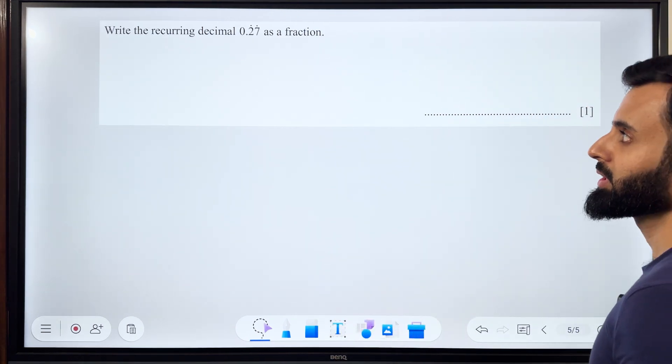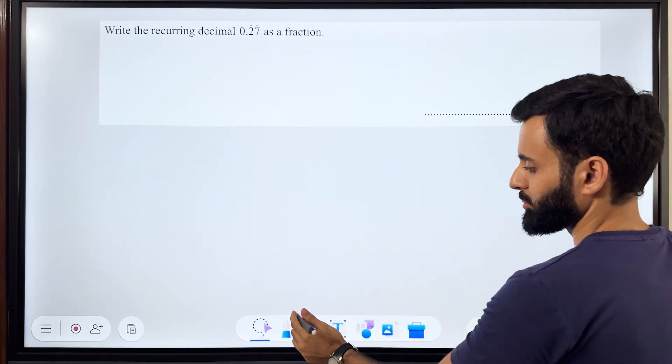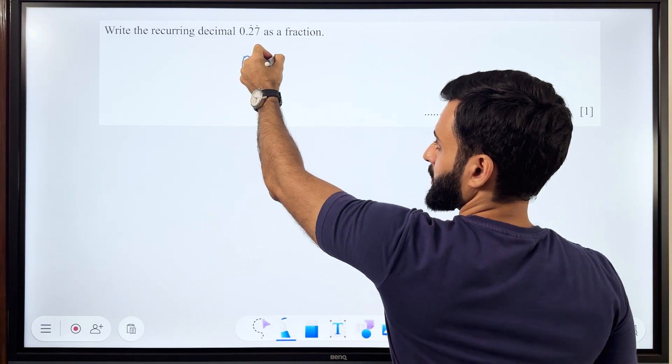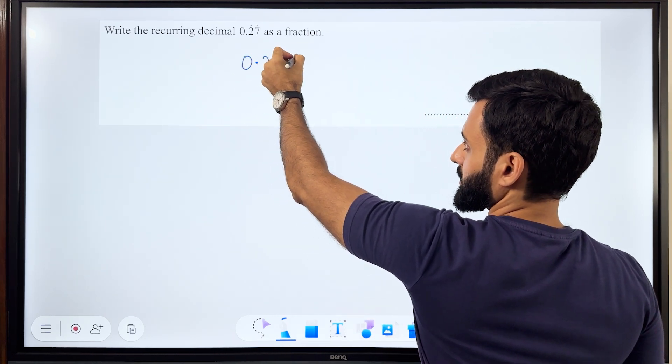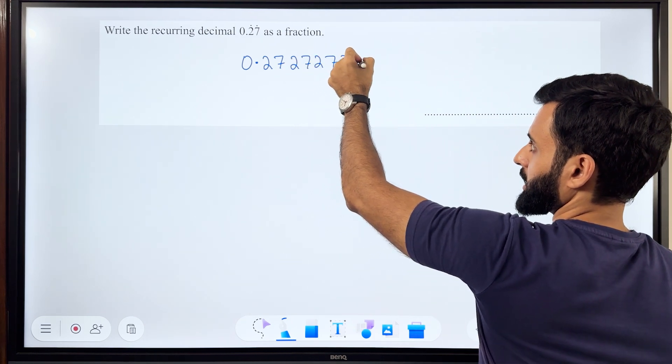Write the recurring decimal 0.27 as a fraction. Now notice that there is a dot on 2 and there is a dot on 7. What does that mean? Well, that means the recurring pattern looks like this: 2, 7, 2, 7, 2, 7, and the same pattern continues.